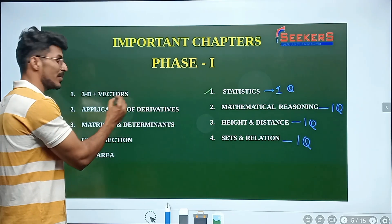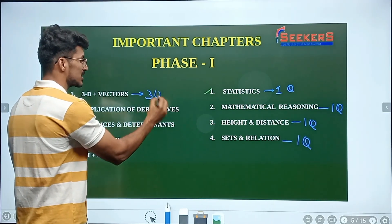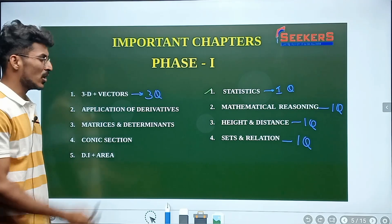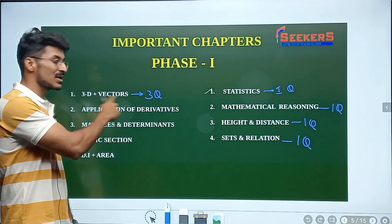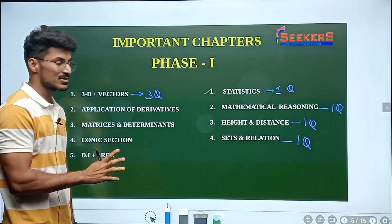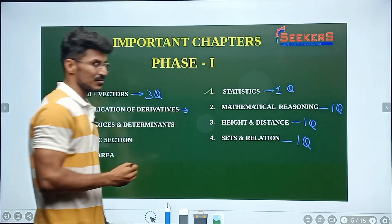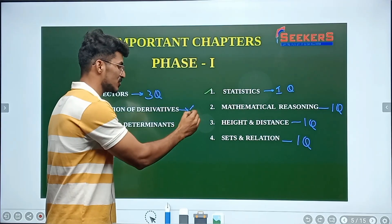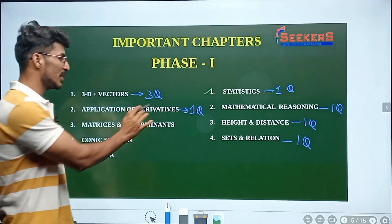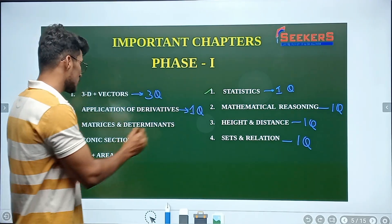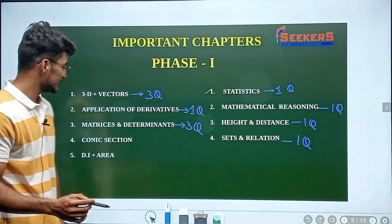Coming to 3D geometry and vectors, you're definitely going to get three questions every year — on average three questions from 3D geometry and vectors. Coming to application of derivatives, you could expect one to two questions — let's say a minimum of one question. Matrices and determinants give three questions every year.